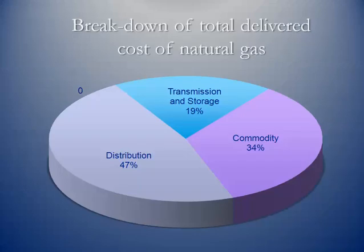Here's a breakdown of that delivered price. When you get that gas bill and look at it, these are the components. The commodity is only 34% of that — that's the price of the commodity itself. The LDC or the pipeline company accounts for about 19% of the cost, having to do with transmission, pipeline, transportation, and storage. But then the distribution costs are 47%, so this is your gas company providing that service.